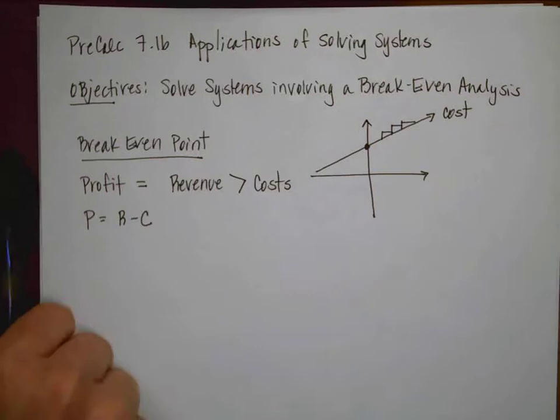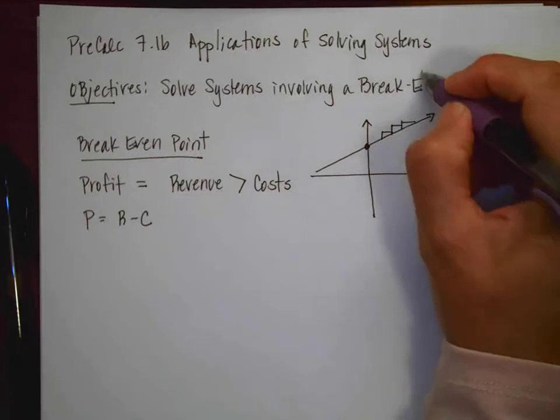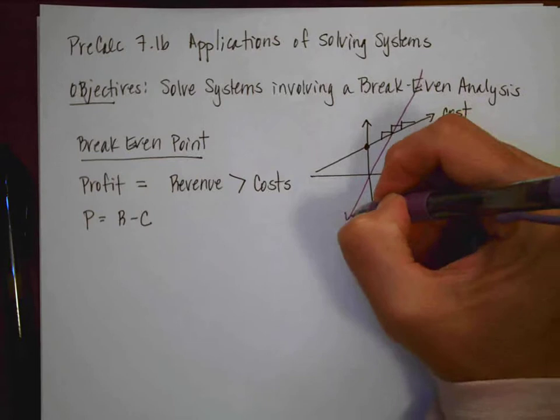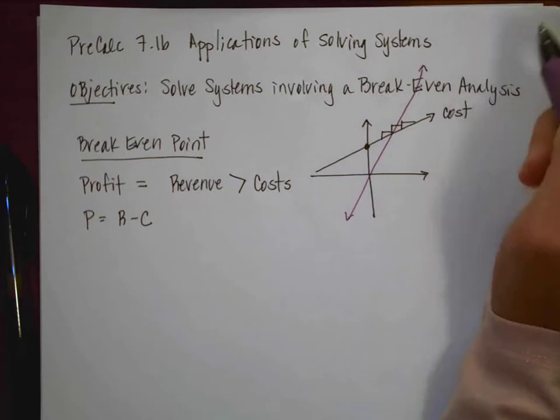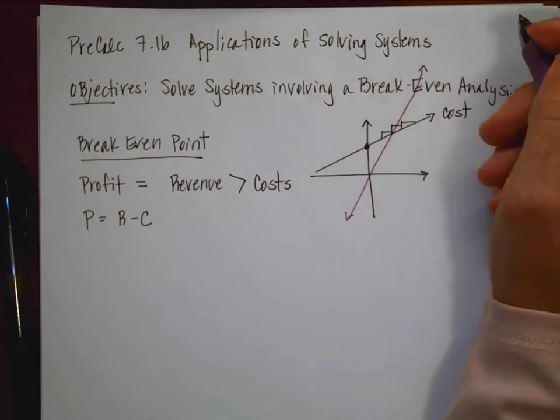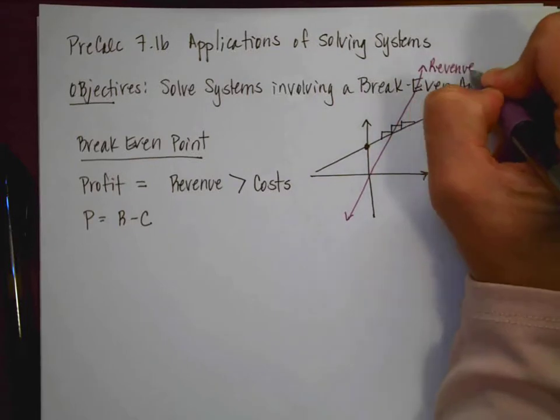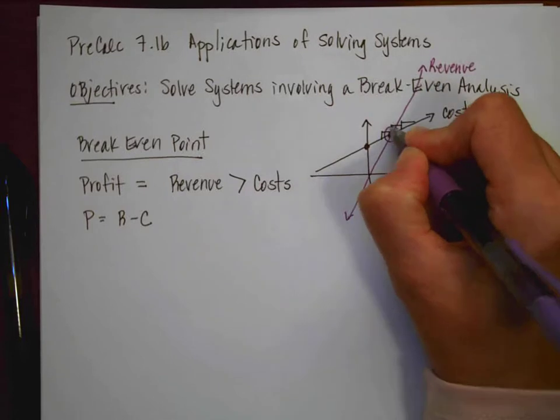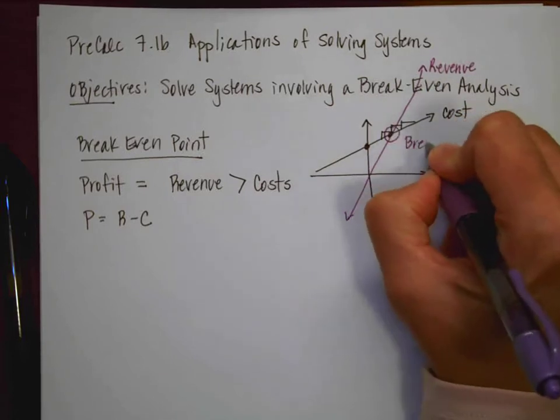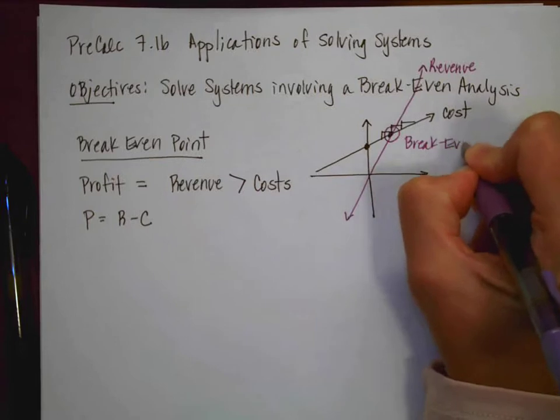And then I might have another line, which is going to be my revenue. The y-intercept on that is usually zero because when I've made nothing, I make nothing. So this is going to be my revenue. So this point right here is called the break-even point.